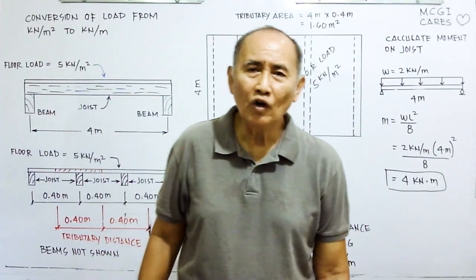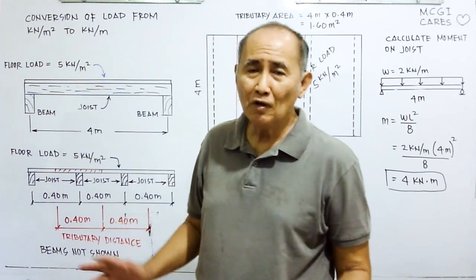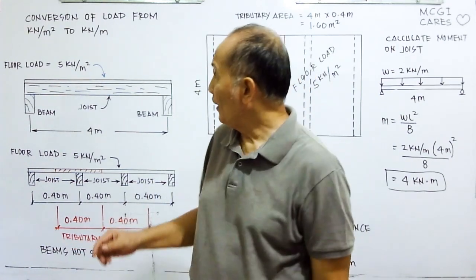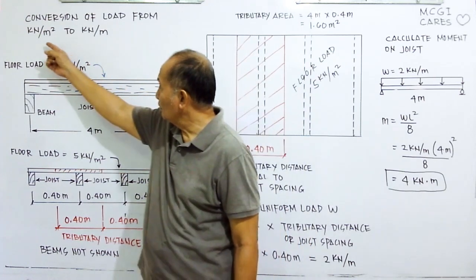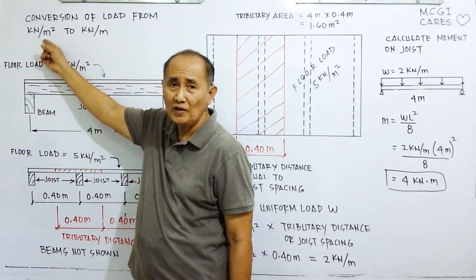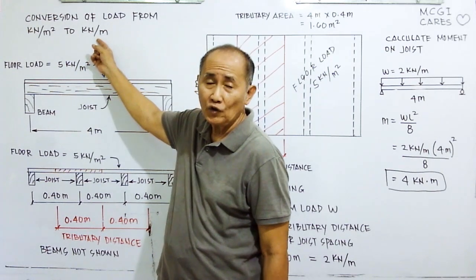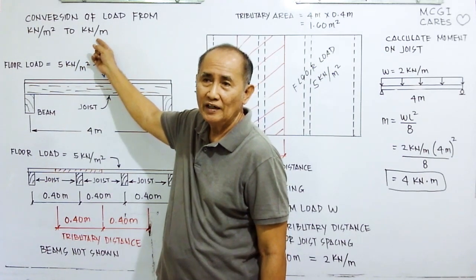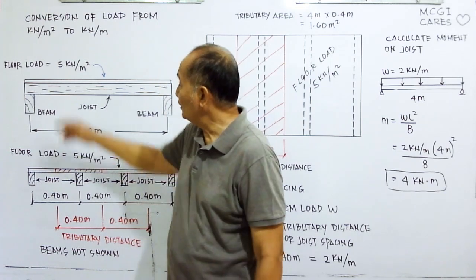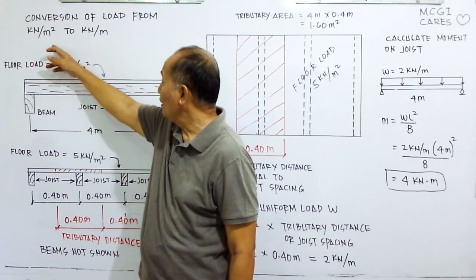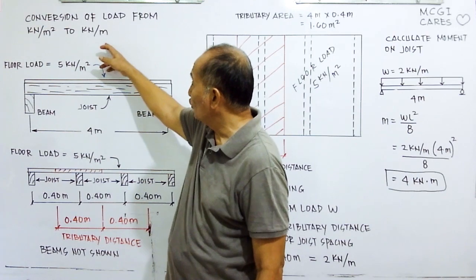Today we are going to discuss uniform loads. There are two types: kilonewton per square meter and kilonewton per meter. We're going to try to convert kilonewton per square meter to a uniform load of kilonewton per meter.